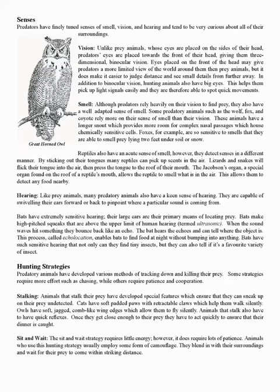Like prey animals, many predatory animals also have a keen sense of hearing, capable of swiveling their ears to pinpoint where a sound is coming from. Bats have extremely sensitive hearing, and their large ears are their primary means of locating prey. Bats make high-pitched squeaks above the upper limit of human hearing — termed ultrasonic. When the sound waves hit something they bounce back like an echo; the bat hears the echoes and can tell where the object is. This process, called echolocation, enables bats to find food at night. Bats have such sensitive hearing that they can not only find tiny insects, but can also tell if it's a favorite variety.